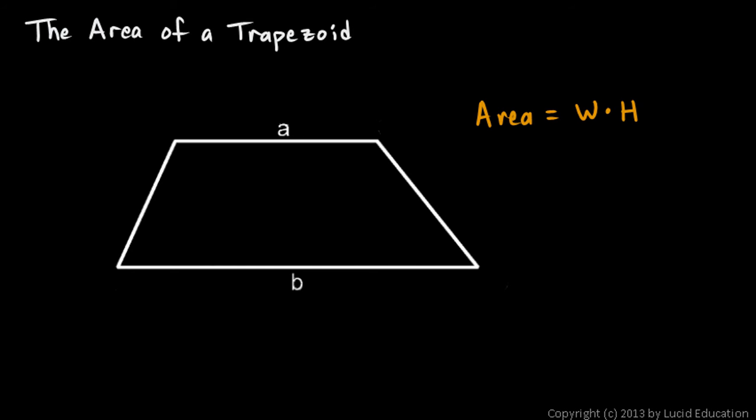Maybe we could use that formula to find the area of a trapezoid. The height of the trapezoid is pretty obvious. That's the vertical distance between the bases. But what is the width? What would we put in for the width of a trapezoid?